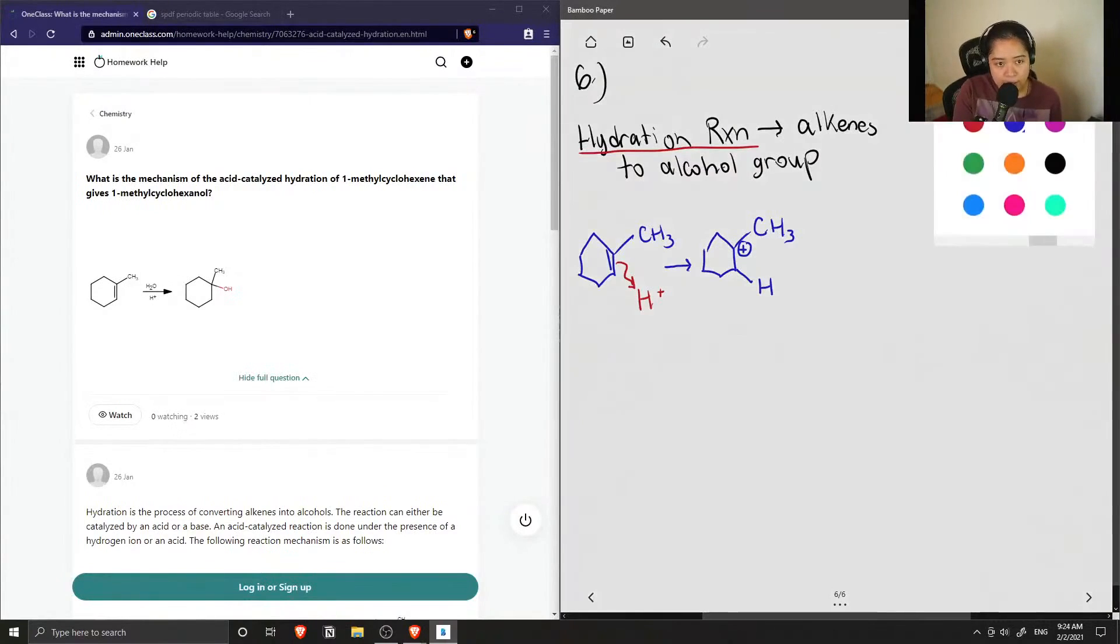Now we have a positively charged carbon, which can be called a carbocation. And if we have a molecule of water, this can come in and try to neutralize that positive charge on the carbon, giving us the following intermediate, where there is now a new carbon to oxygen bond.